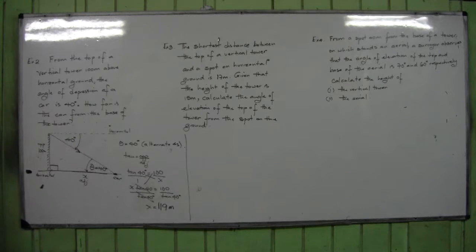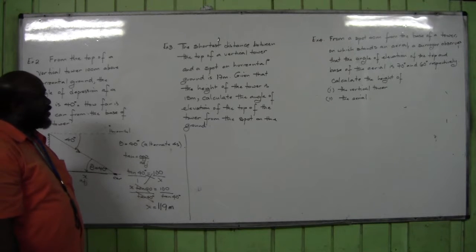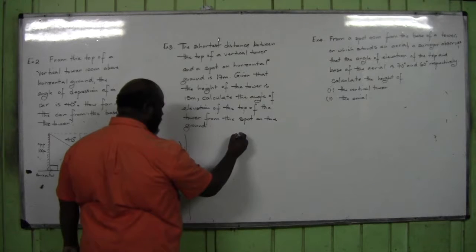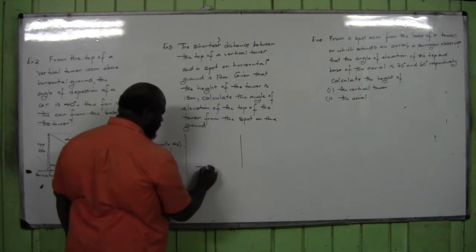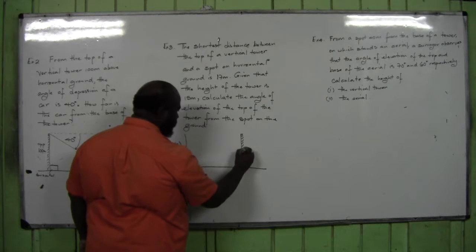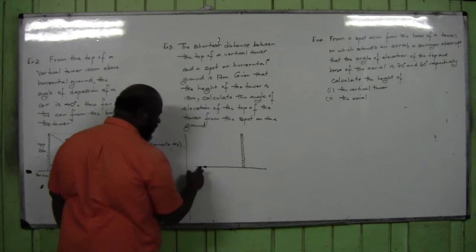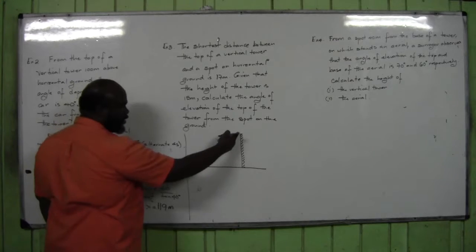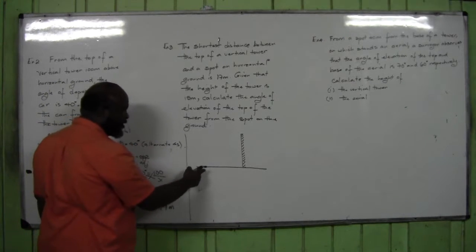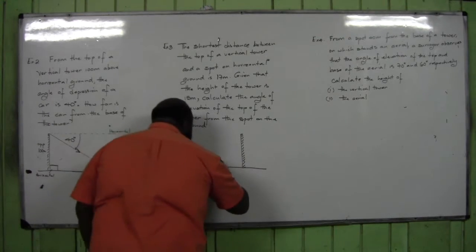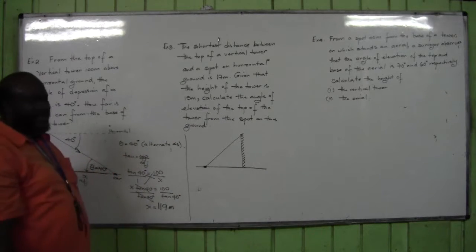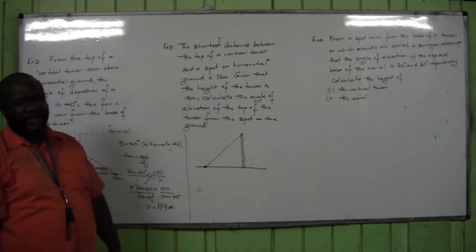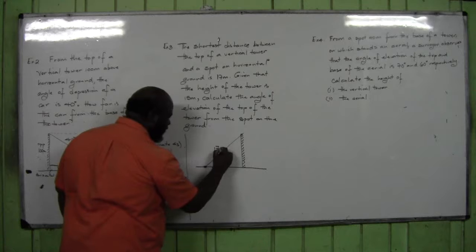Alright, number two — stay focused. The shortest distance between the top of a vertical tower and a spot on horizontal ground is 17 meters. There is a vertical tower on horizontal ground and there is a spot. The shortest distance between the spot and the top of the tower is a straight line, and that shortest distance is 17 meters.